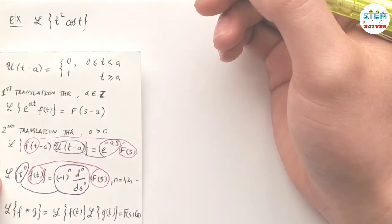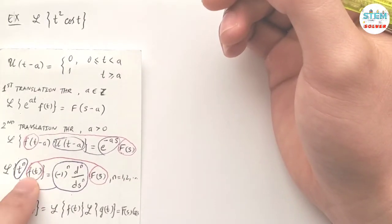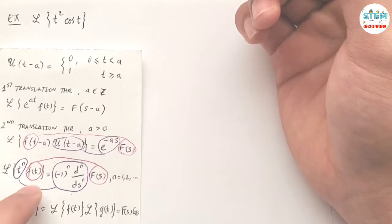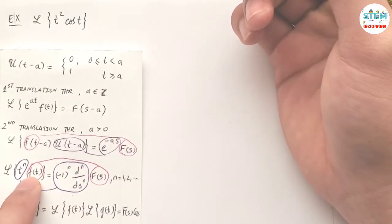For that theorem, if you don't remember, I have the formula here: L{t^n f(t)}. Whatever t^n is, it's going to be (-1)^n times the nth derivative of the Laplace transform of this function.